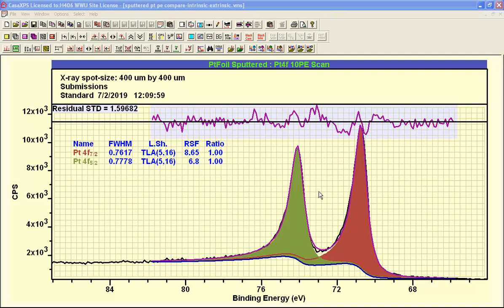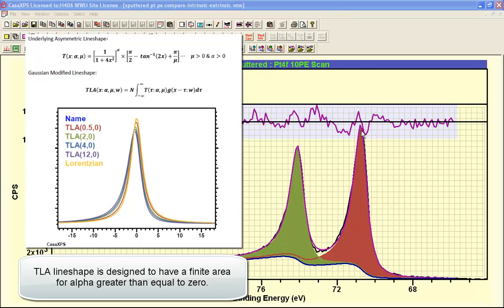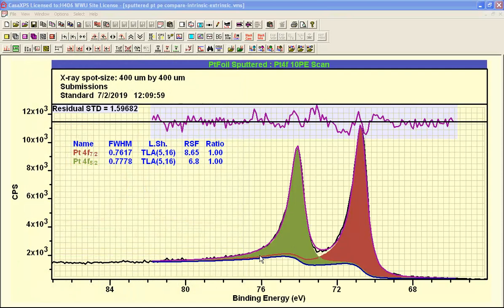When we measure photoemission peaks using synthetic line shapes, one of the important features of a line shape is that the area beneath that line shape, the functional form of the line shape that is, must integrate to a finite value. That's exactly what a Gaussian does, it's exactly what a Lorentzian does.